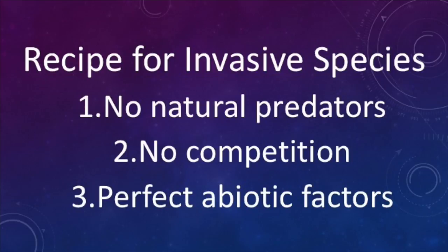We know that we have an impact on population numbers because of direct things we do to a species' habitat, such as deforestation or arson. We can also impact the habitat indirectly by releasing invasive species into an ecosystem. An invasive species is a non-native species introduced into an environment in which it flourishes. The environment must have the abiotic factors the organism needs to survive. The biggest concern is the lack of predation and competition — without these two factors limiting population numbers, their populations can explode and grow exponentially, having a drastically negative impact on native species.